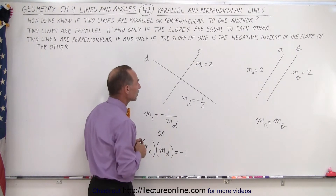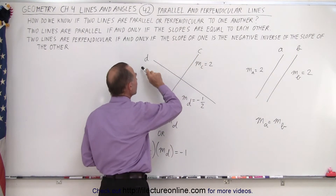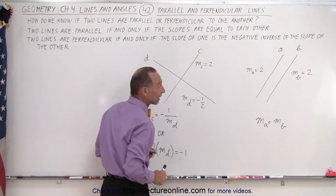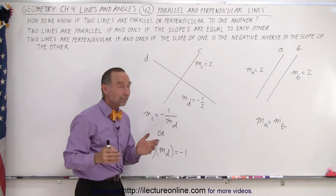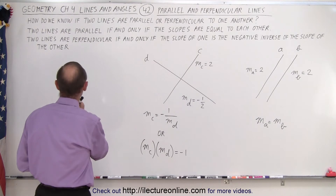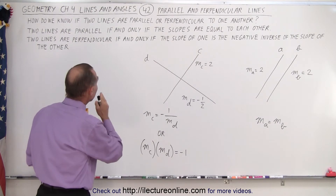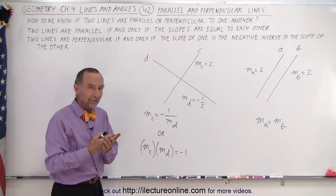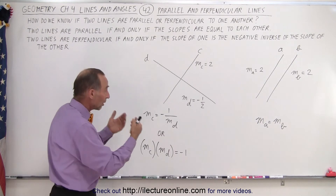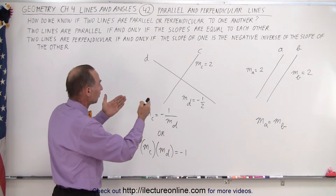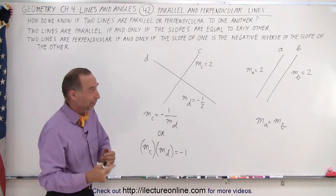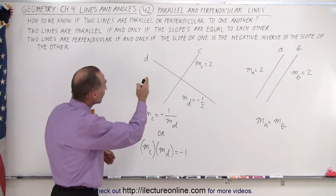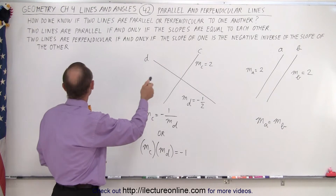Over here we have two lines, C and D. The slope of C is 2 and the slope of D is negative one half. Two lines are perpendicular if and only if — it's not just 'if,' but the only condition that can qualify the two lines as being perpendicular — means if and only if the slopes are equal to each other.